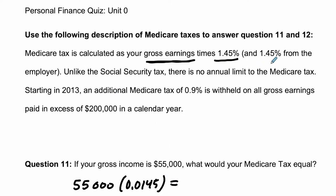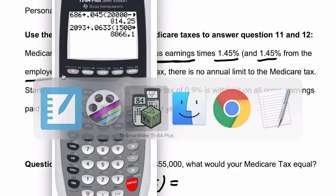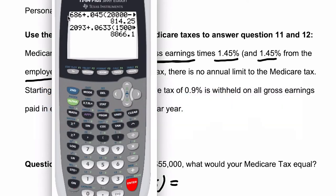Now be careful — you don't have to double that. The 1.45% that your employer pays is not part of this calculation; you're assuming you're not the employer here. So it's just a calculation of 55,000 times 1.45%, so 55,000 times 0.0145, and that gives you $797.50.